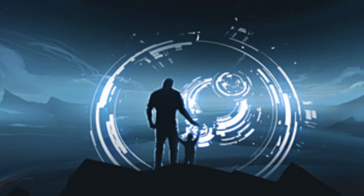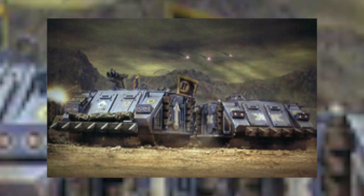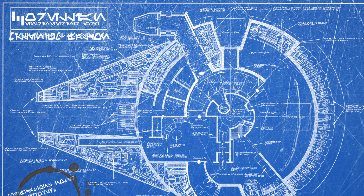The STC systems themselves worked by providing a holographic format — the full schematic for a machine, device, or vehicle — according to the given needs of the user. This resulted in the production of some extremely sturdy, functional designs still found throughout the Imperium. Examples of STC technology still in use include the Rhino armored personnel carrier and the Land Raider.